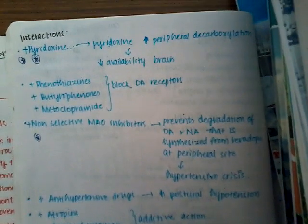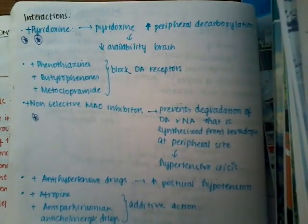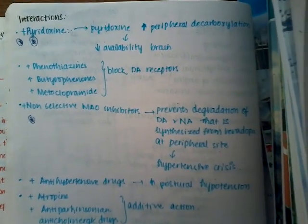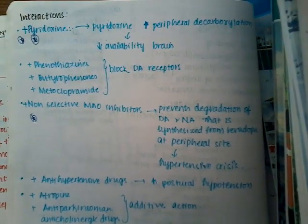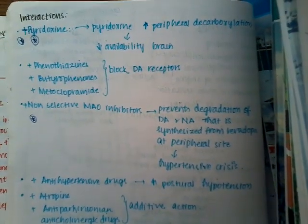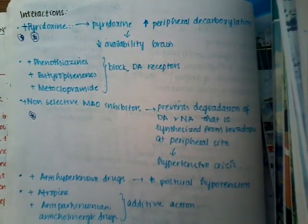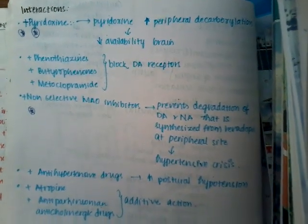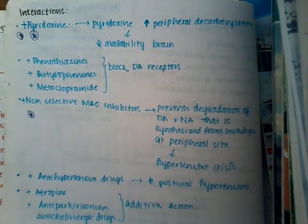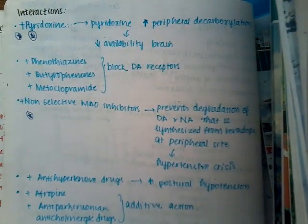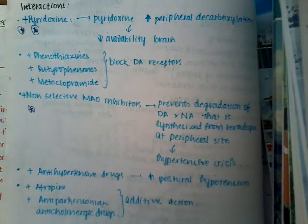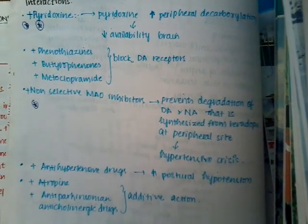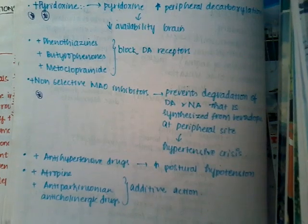Interactions of levodopa: pyridoxine (vitamin B6) increases peripheral decarboxylation by activating dopa decarboxylase, thus decreasing dopamine availability to the brain. Therefore, vitamin B6 should never be given along with levodopa.